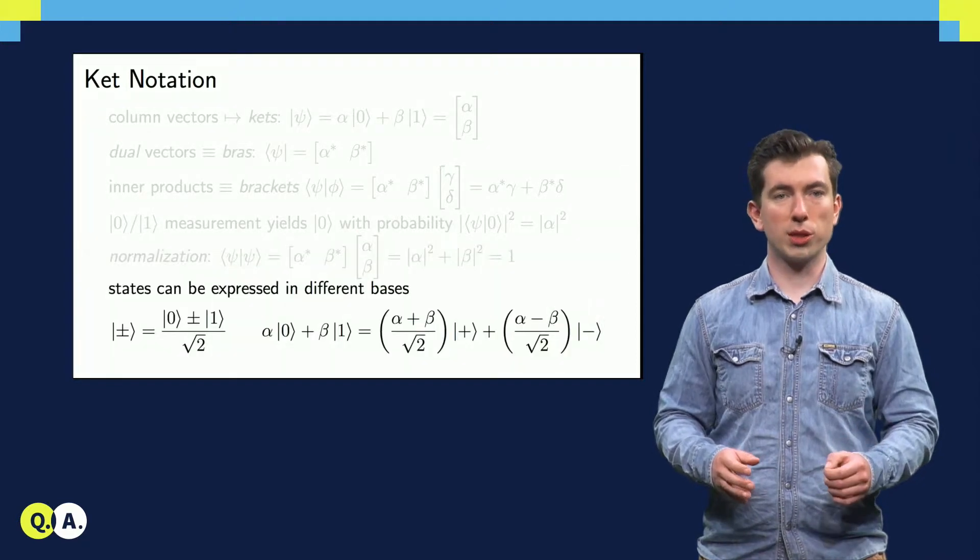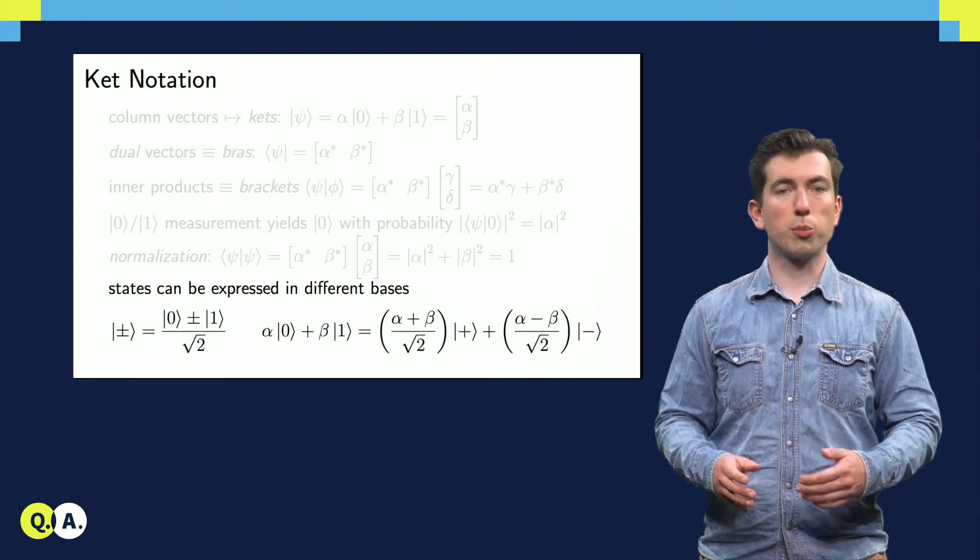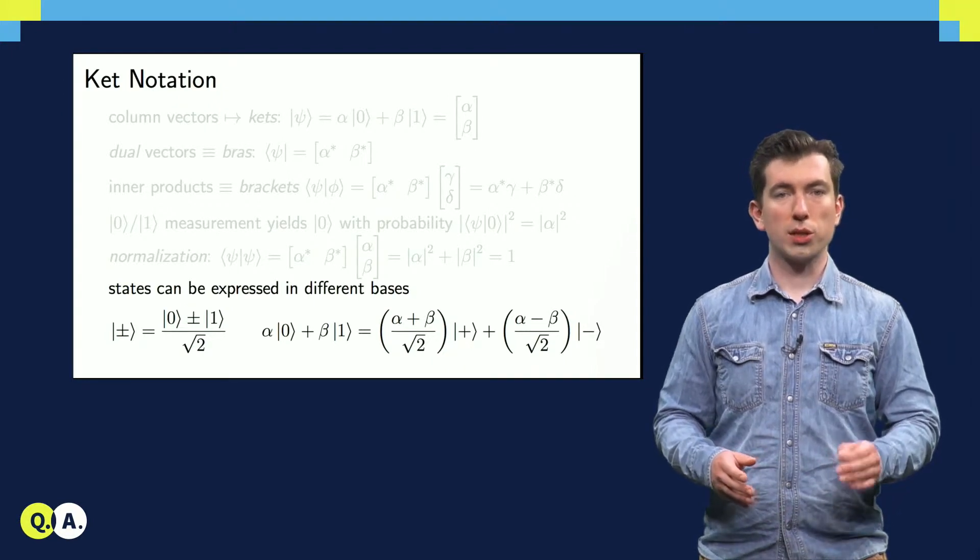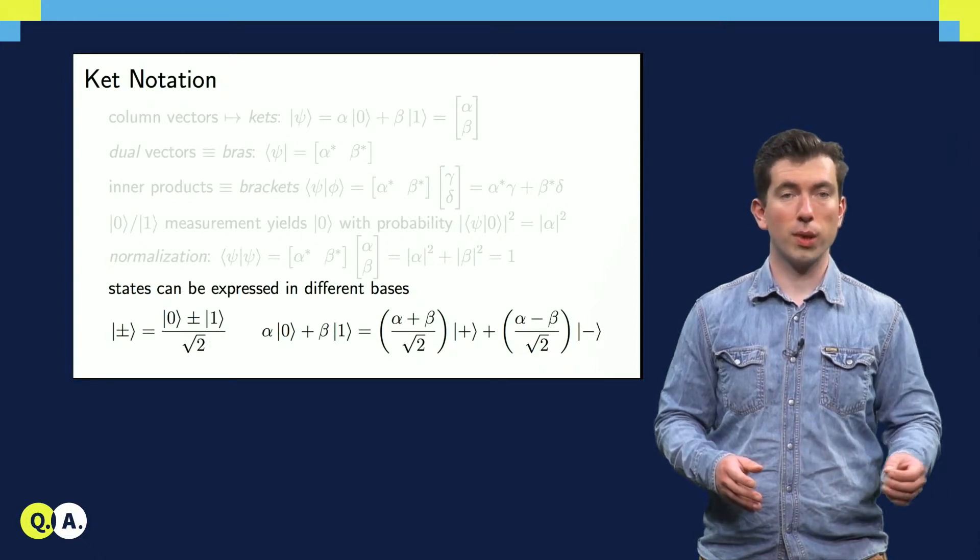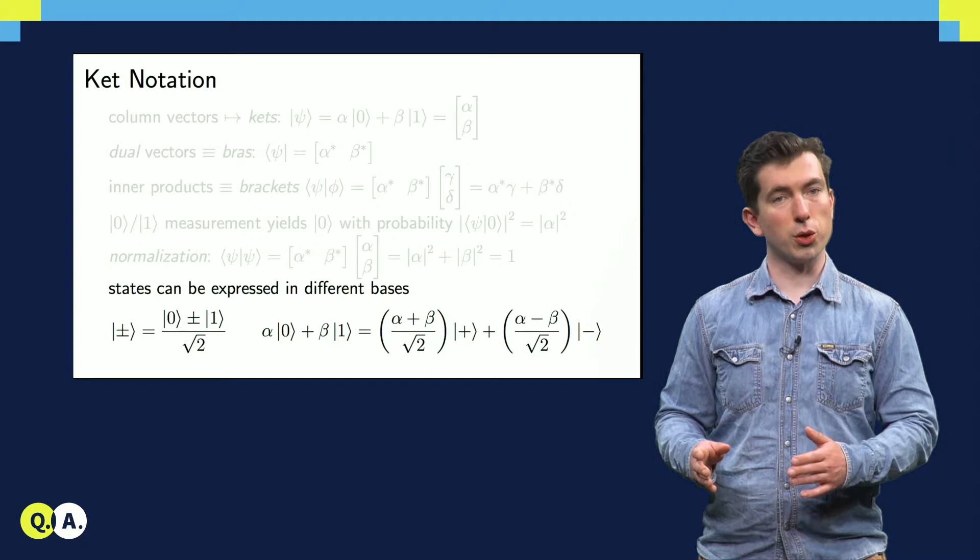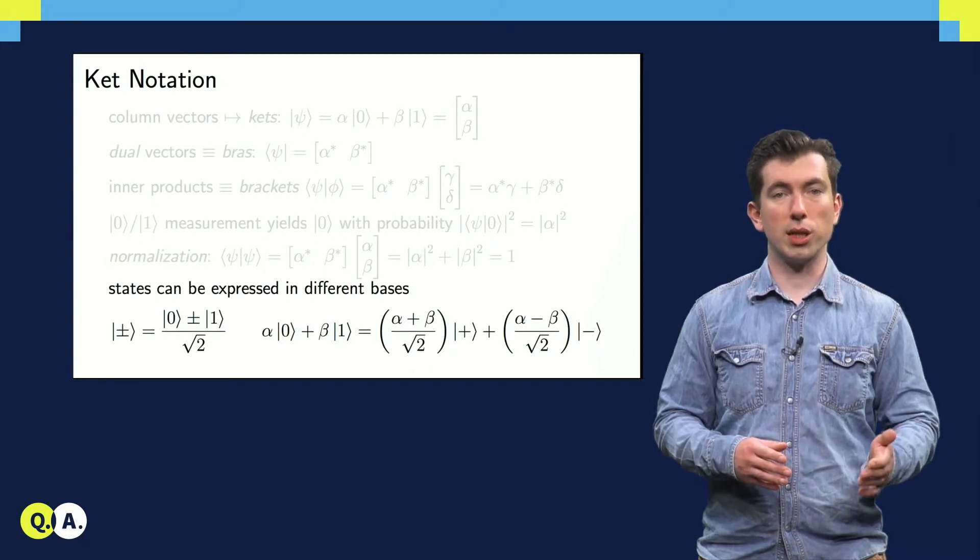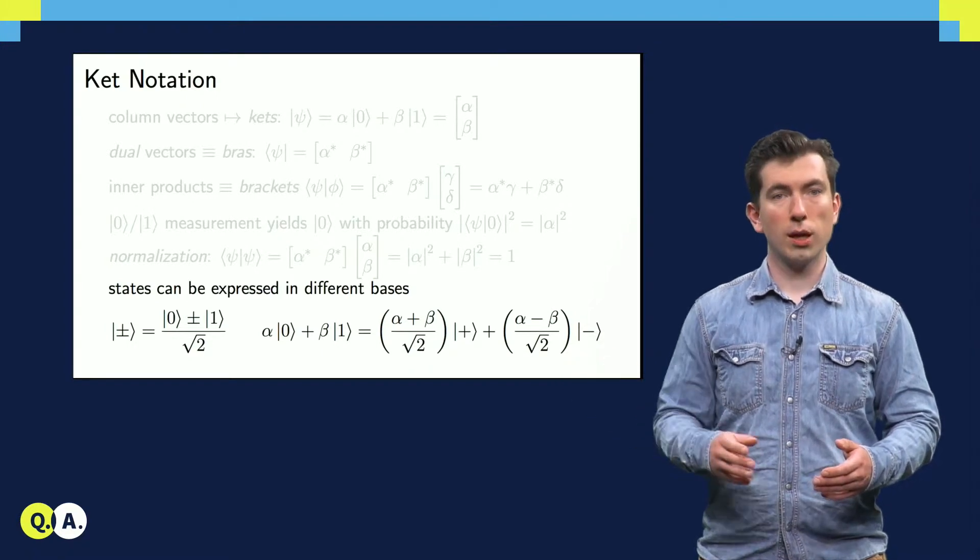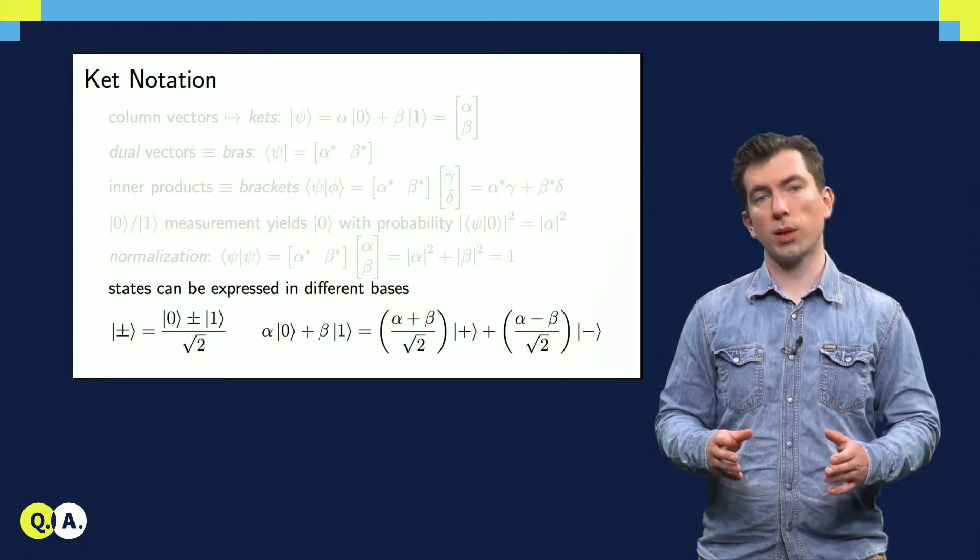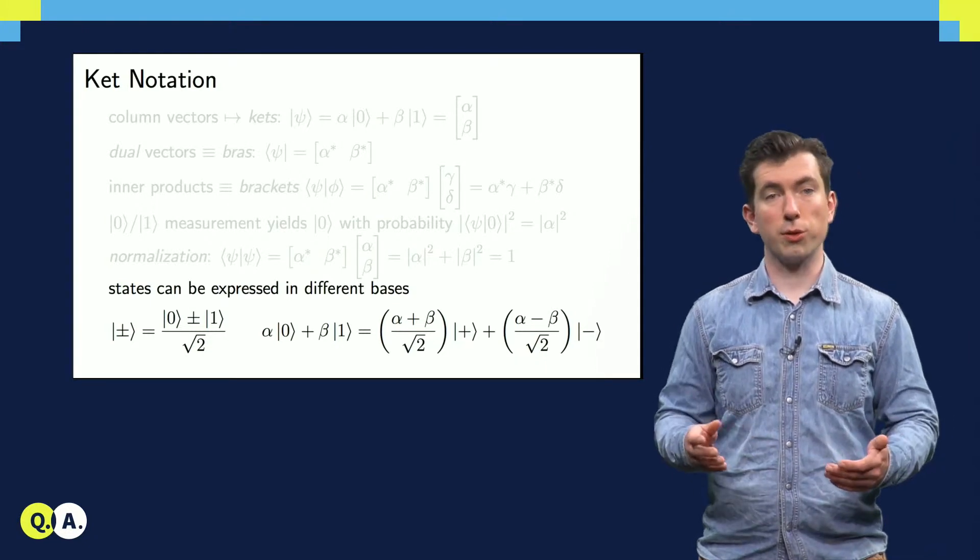We can also express qubit states in different bases. Consider the often used plus-minus basis, which consists of the normalized sum and difference of the 0 and 1 ket vectors. Given a state expressed in the 0, 1 basis, we can calculate the coefficients required to express the same state in the plus-minus basis, as I've done here. This leaves us with a small question: if any basis is just as good as any other, is there a basis that we should use as the default?